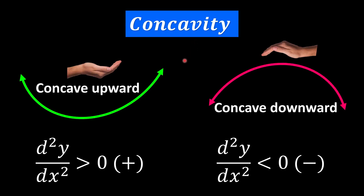Concavity tells us the behavior of the curve — either it's concave upward like this hand, or concave downward like this hand. We can use the second derivative to find the concavity. When the second derivative is bigger than zero (positive), it means concave upward. When the second derivative is a negative value, it means concave downward.